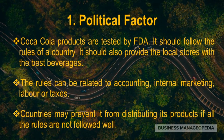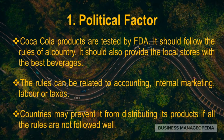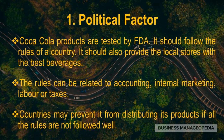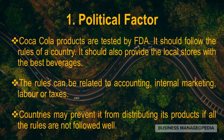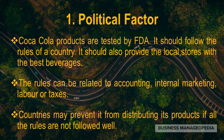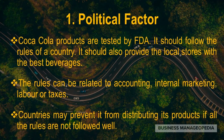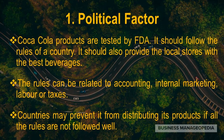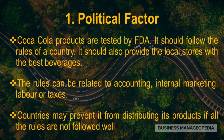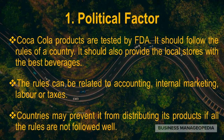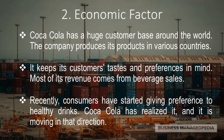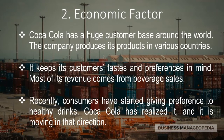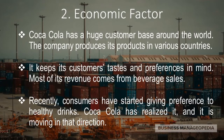Number one is political factors. Coca-Cola products are tested by the FDA, and the company must follow the rules of each country where it operates, including regulations related to accounting, internal marketing, labor, or taxes. It should also provide local stores with the best beverages. Countries may prevent Coca-Cola from distributing its products if all the rules are not followed.